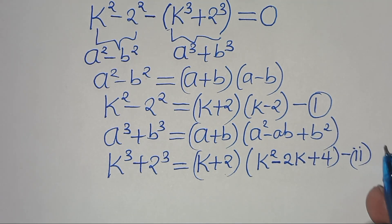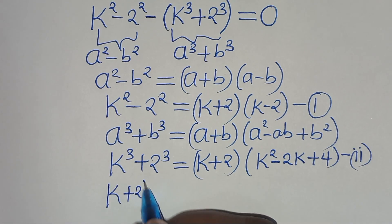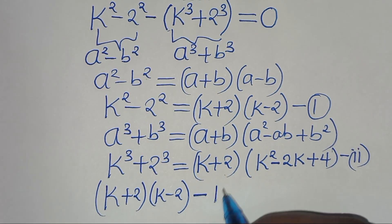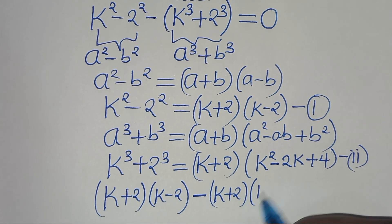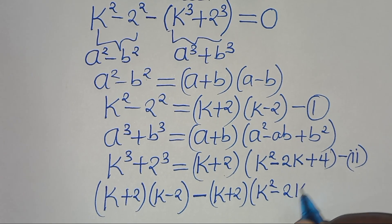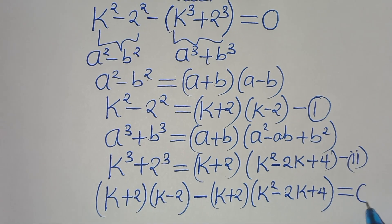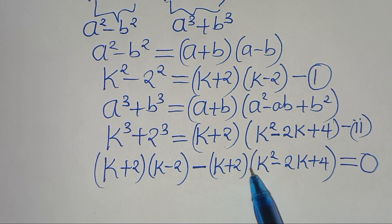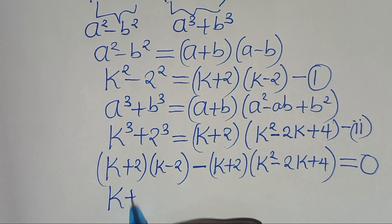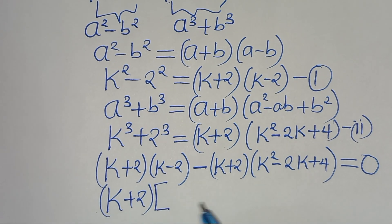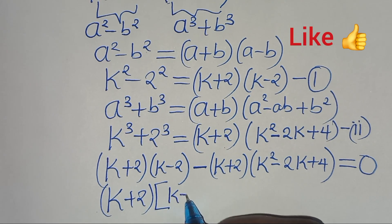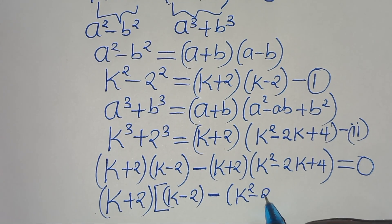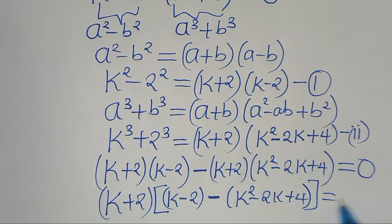Combining equation 1 and equation 2, we have (k + 2)(k − 2) minus (k + 2)(k squared minus 2k + 4) equals 0. We can see that (k + 2) is a common factor, so we factor it out: (k + 2) times [(k − 2) minus (k squared minus 2k + 4)] equals 0.